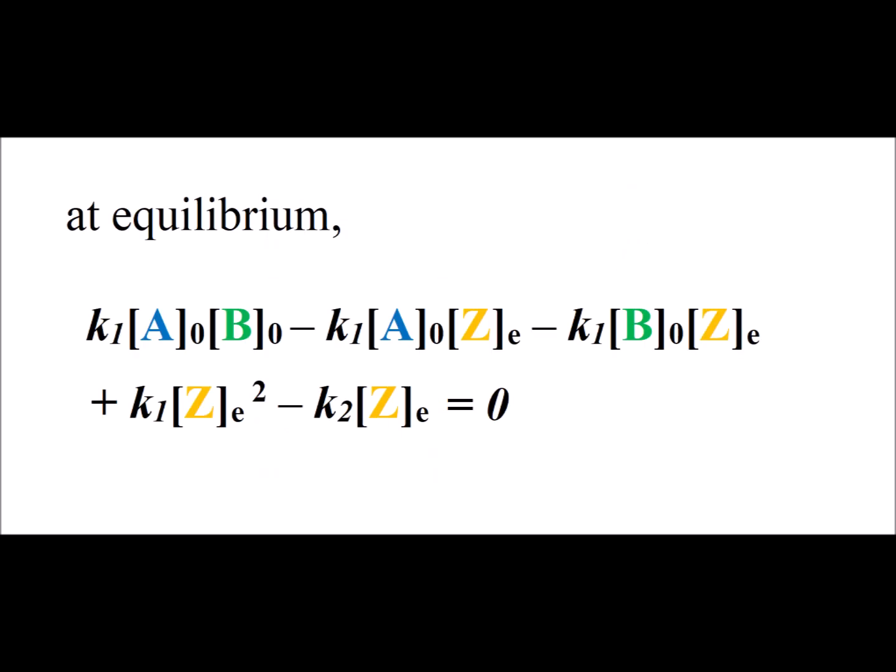Now, we note that when we are at equilibrium, the change in the concentration of z per unit time is equal to zero. So we set that equal to zero, and we replace the concentration of z by its equilibrium concentration, z sub e, to get the expression shown on the slide at equilibrium.